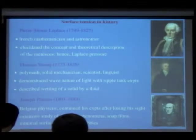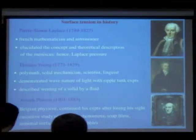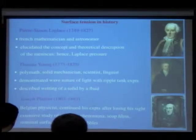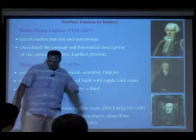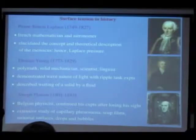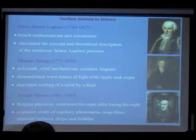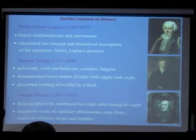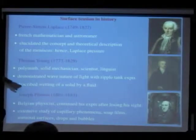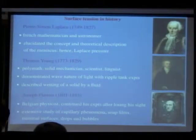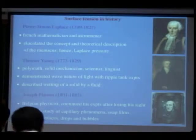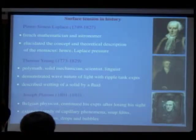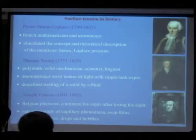Thomas Young was another polymath — good at everything. He did solid mechanics (Young's Law), was a scientist, and also translated the Rosetta Stone. He looked at the nature of light with ripple tank experiments, and he looked at the wetting of a solid by a fluid: when you put a blob of fluid onto a solid, what shape does it take? There's something called Young's Law, which we'll come to next class.